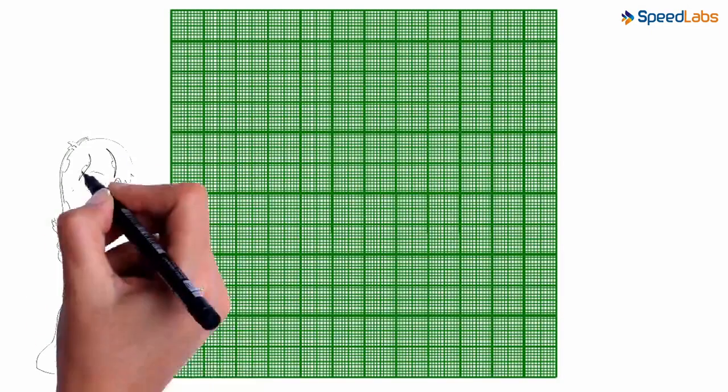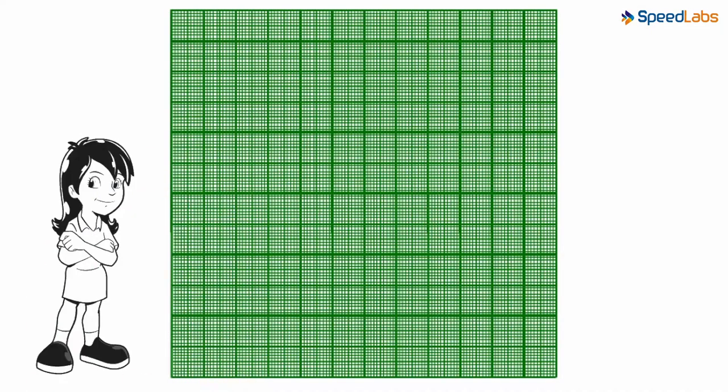Until now, we have seen how points can be plotted on a graph paper. In this video, we will understand how lines are plotted on the graph and the line is given an equation.